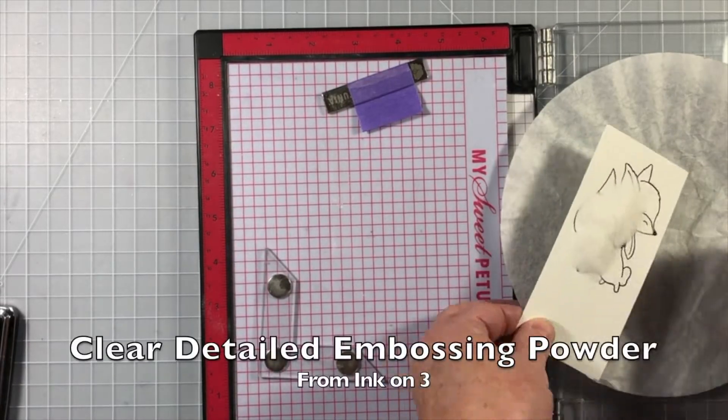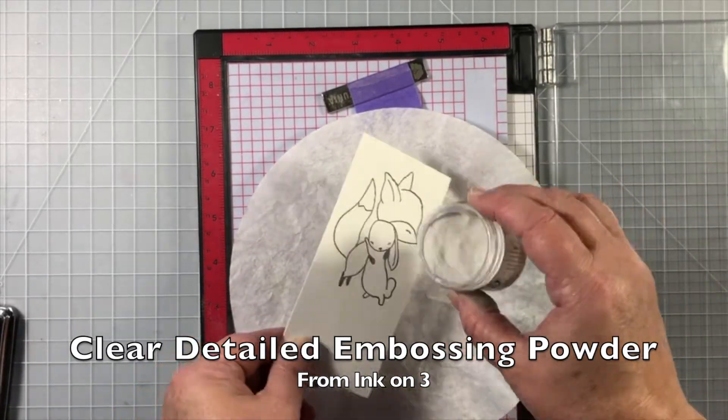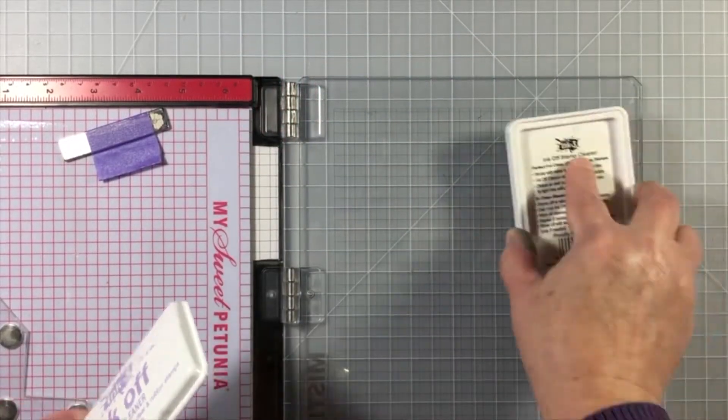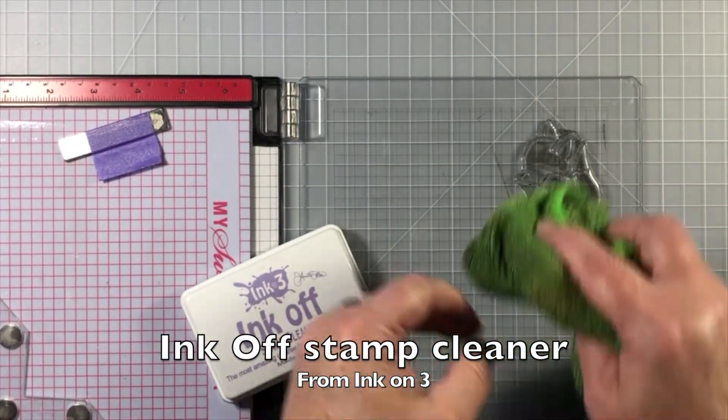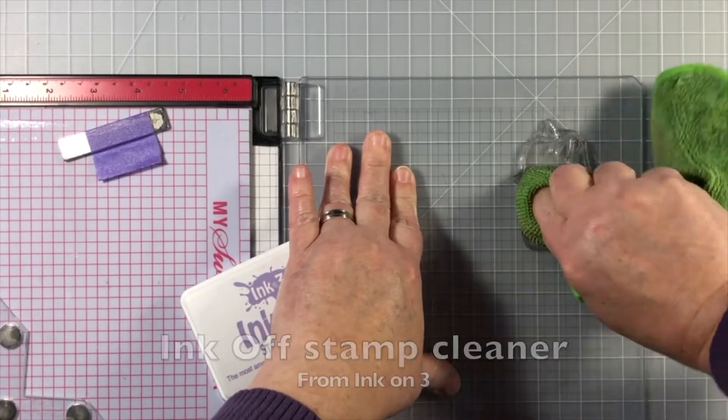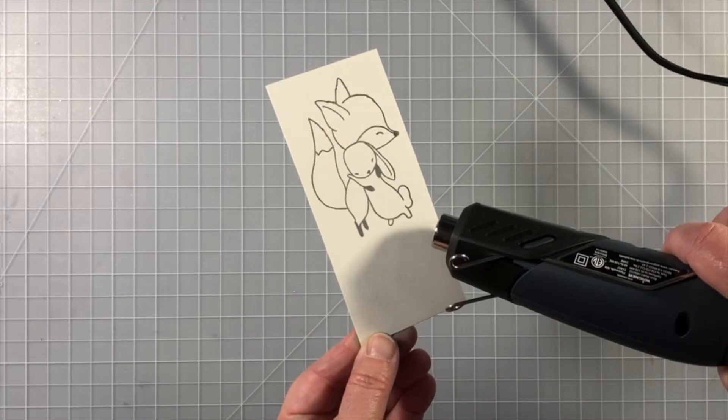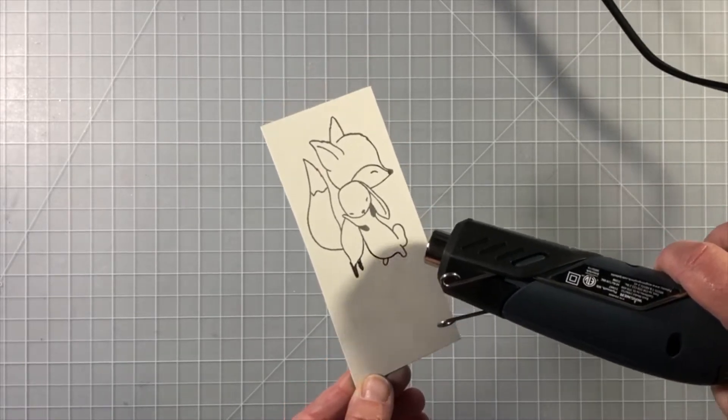I've got another piece of watercolor paper here. I've stamped the image with some blackout ink from Ink on 3 and sprinkled on some clear embossing powder. Now here's something I don't usually show. This is the Ink Off stamp cleaner that I use on almost every one of my images. It works so well.